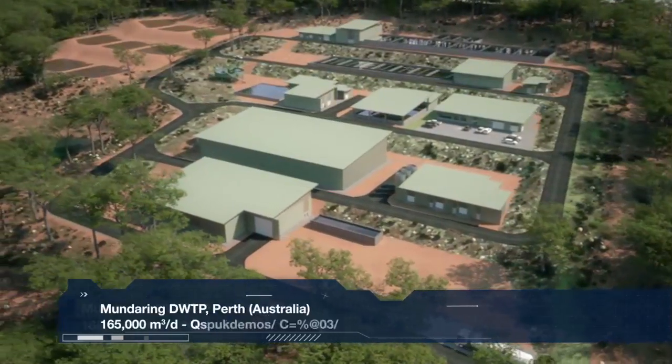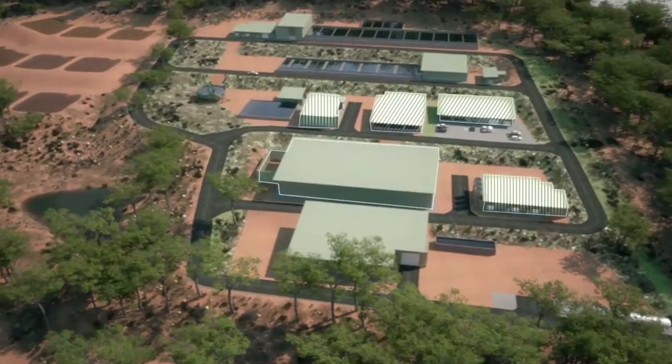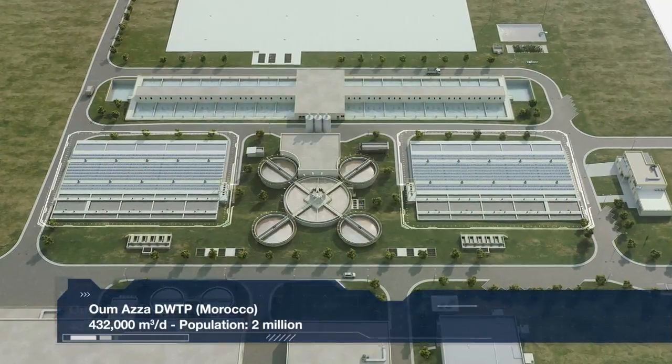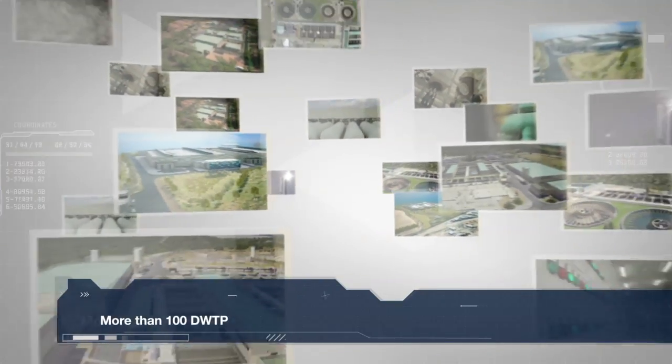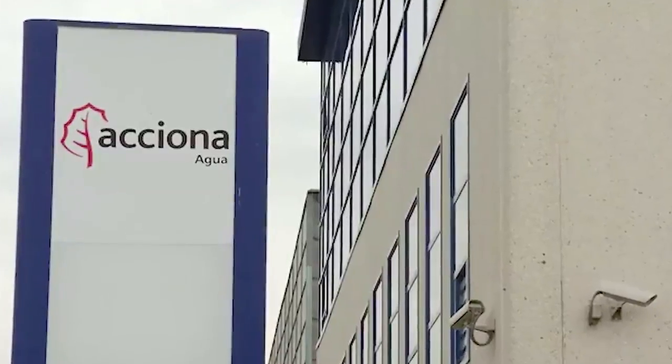Proof of it is the waterworks of Mundaring in Australia, which will supply the northern part of the city of Perth and the Goldfield region in the state of Western Australia, the waterworks of Omaze in Morocco, as well as more than 100 plants scattered all over the world, supplying water and guaranteeing the future to more than 7 million people.